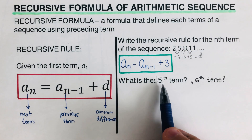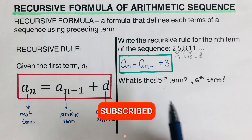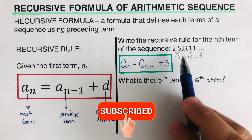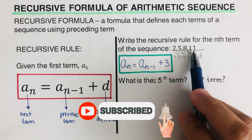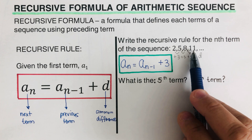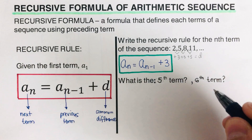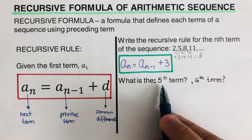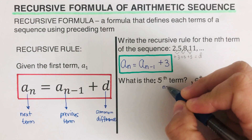Now, what is the fifth term? What is the sixth term? Let's start with the fifth term. We can see the terms labeled: first, second, third, fourth. If we keep adding 3, the fifth term is expected to be 14. But we have to show this using the recursive formula. Since we are looking for the fifth term, our n is 5.